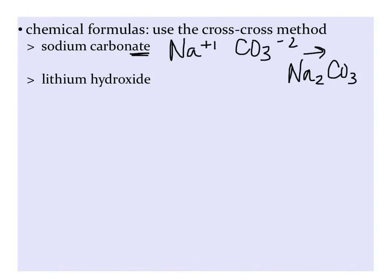In lithium hydroxide, lithium is a plus one charge, and then hydroxide with the -ide ending may lead you to believe that it is a nonmetal. However, this is a polyatomic ion. It's OH with a minus one charge. And when we crisscross our charges, we are left with LiOH.